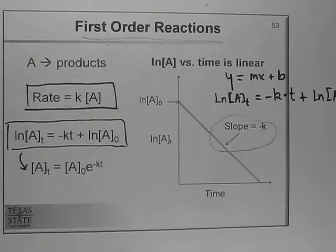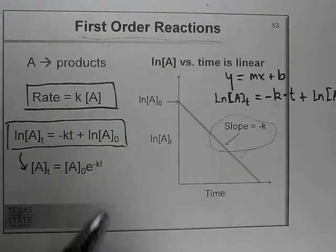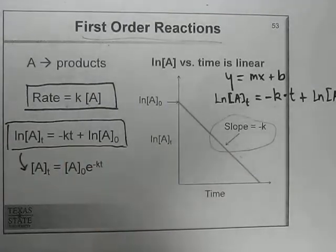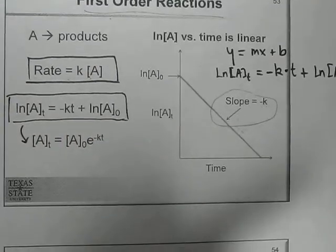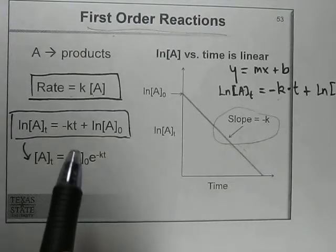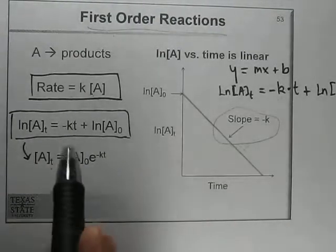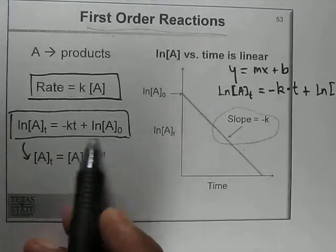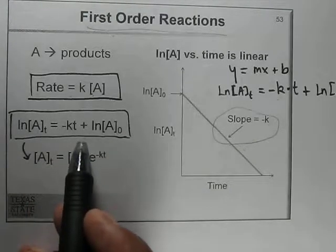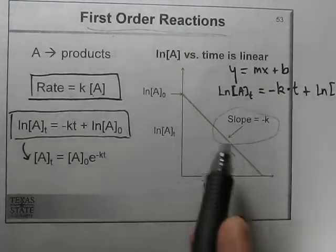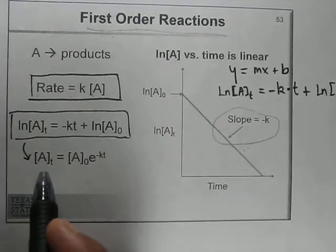In this video we will study some examples of how to solve questions related to first order reactions, and how to calculate the half-life t½ and rate constant k. This is our first order reaction equation: natural log [A] equals minus kt plus natural log [A₀]. This is the graph and the equation.